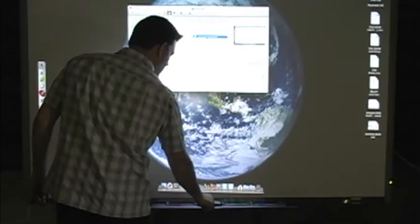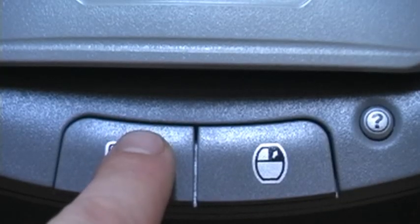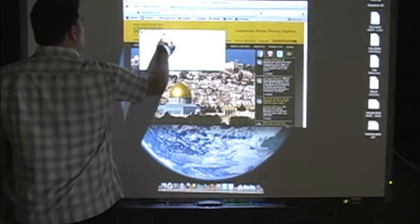You can even right-click by pressing the right-click button on the tray before tapping the screen. If you need to type, simply press the keyboard button on the tray and an on-screen keyboard will appear.